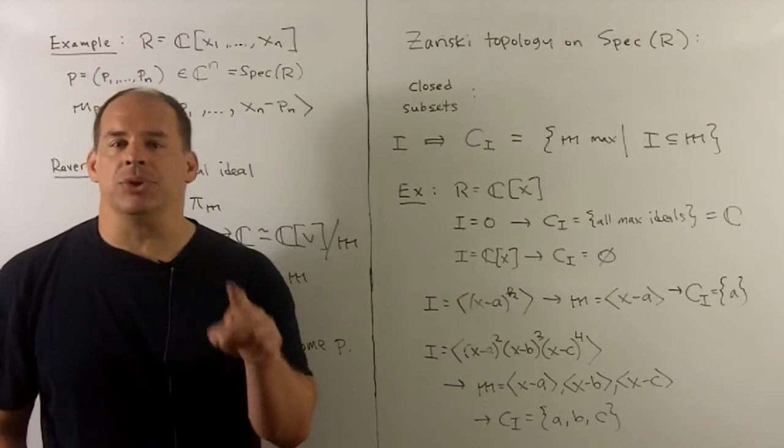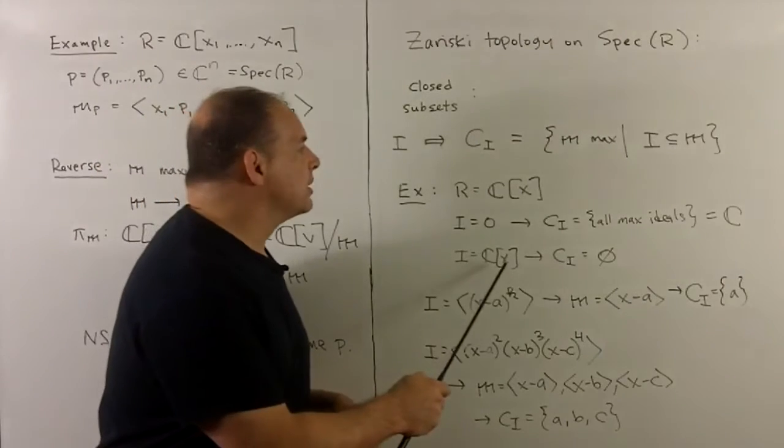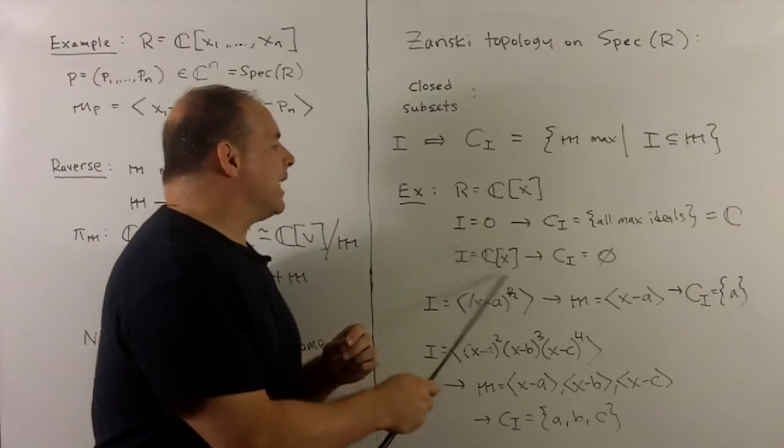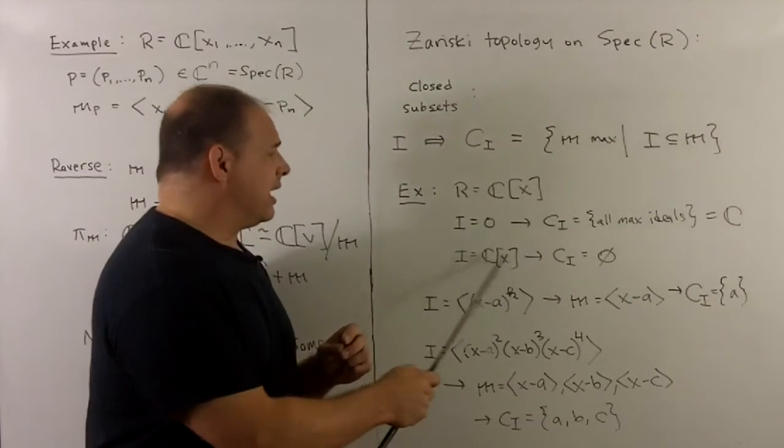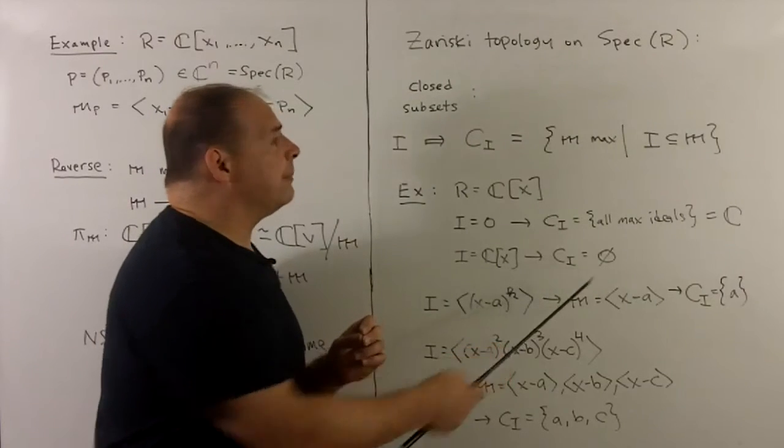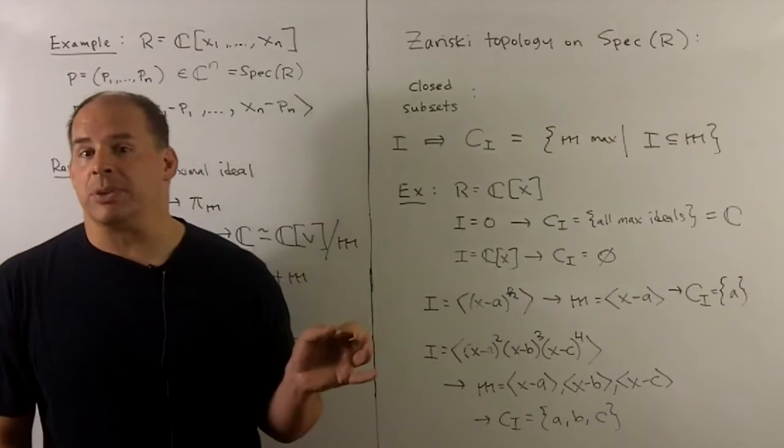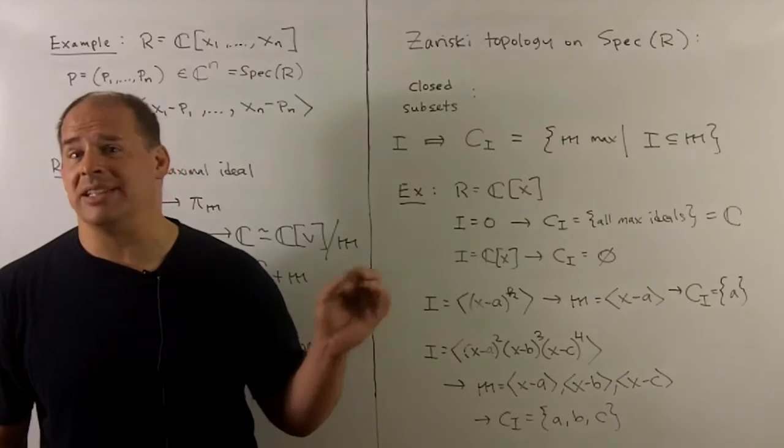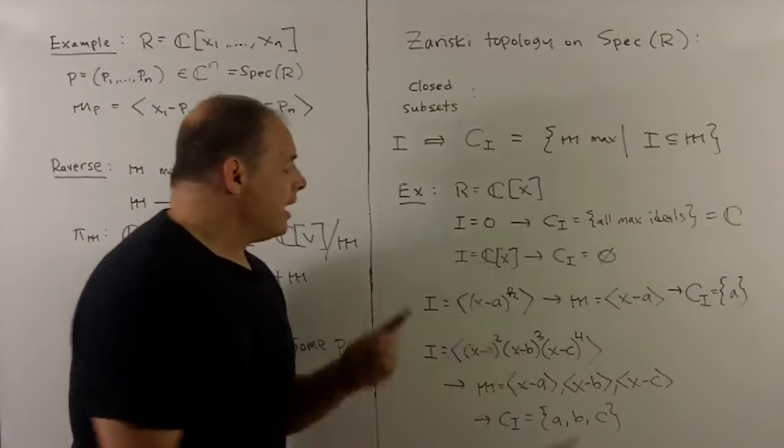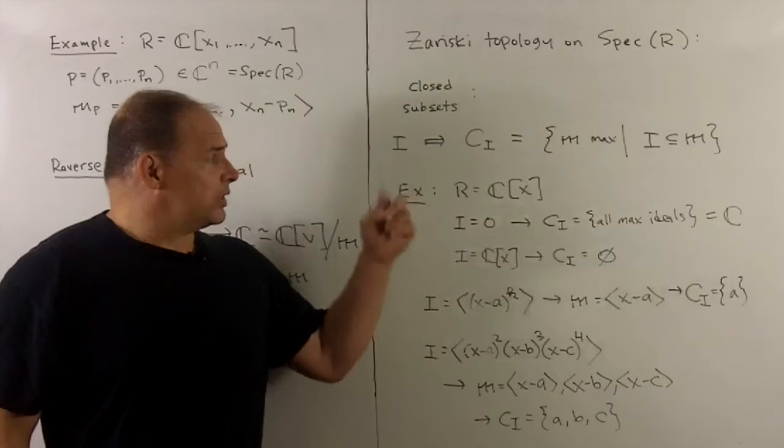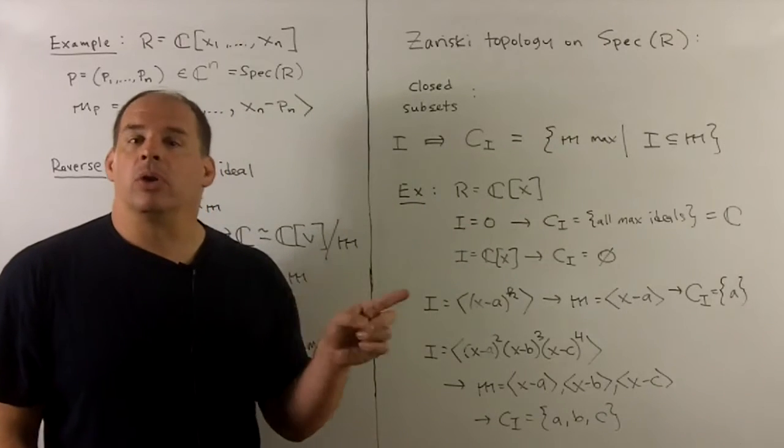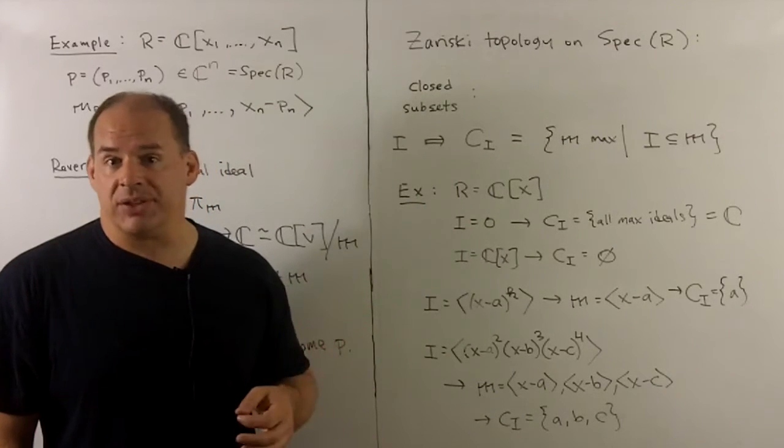If I let the ideal be equal to the entire ring C[X], there are no maximal ideals that contain this. So we're going to get the empty set. So that's part of what you need for the topology. Closed sets are going to include the null set and the entire space. And then we know for the topology here, the only other closed sets are going to be the finite subsets of the plane.